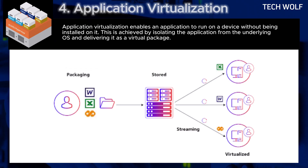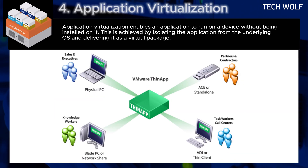Next is application virtualization. Application virtualization enables an application to run on a device without being installed on it. This is achieved by isolating the application from the underlying operating system and delivering it as a virtual package. For example, VMware ThinApp can package an application like Microsoft Office into a standalone executable, allowing users to run Office on any compatible machine without installation, avoiding dependency issues with the operating system or other applications.